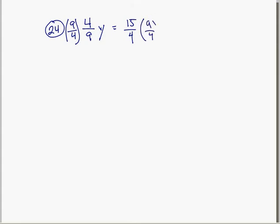The effect of this, you multiply, now multiplying two fractions together, you multiply the numerators, so 9 times 4, which gives us 36. And you also multiply the denominators, so 4 times 9 is also 36. So we have 36y is equal to,